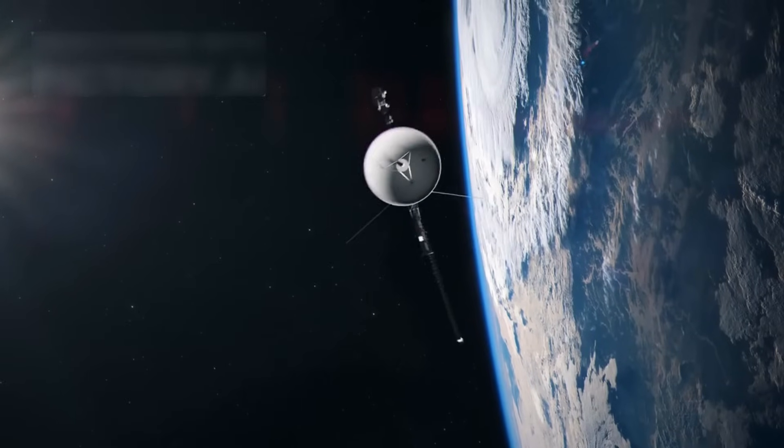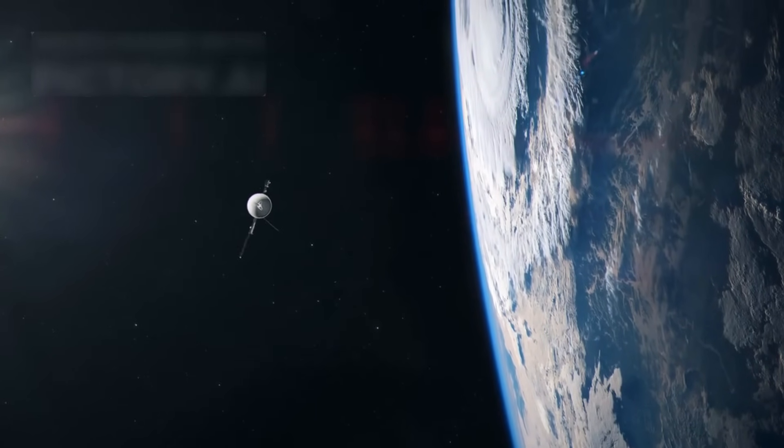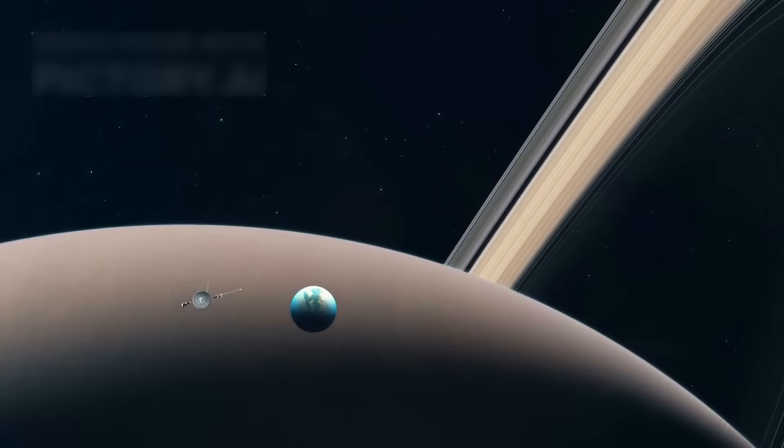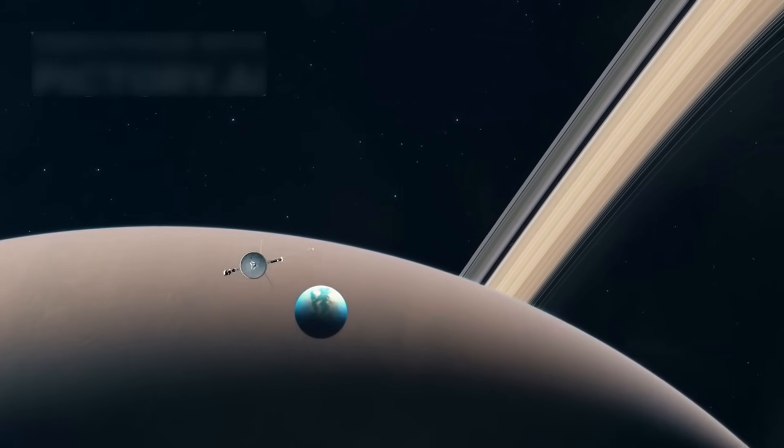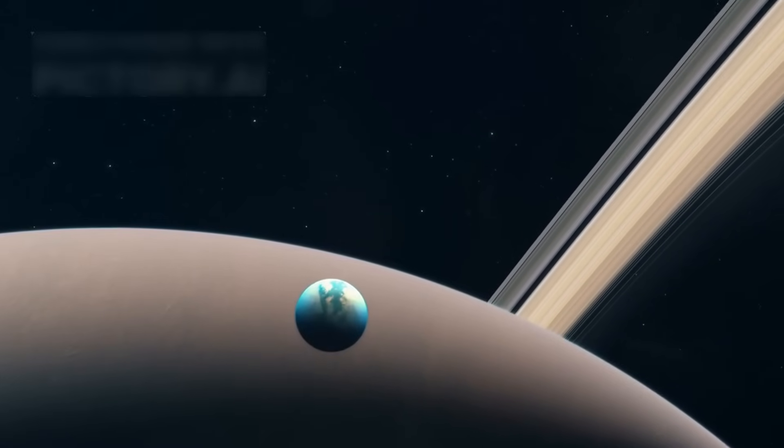Even more amazing is how Voyager 2 is still functioning, despite its ancient circuits and dying battery. Its systems were never meant to handle such extreme cold, yet instruments kept working as if they refused to die. Five systems still send data, but by 2030, they'll all go silent, like stars winking out one by one in a dark sky.